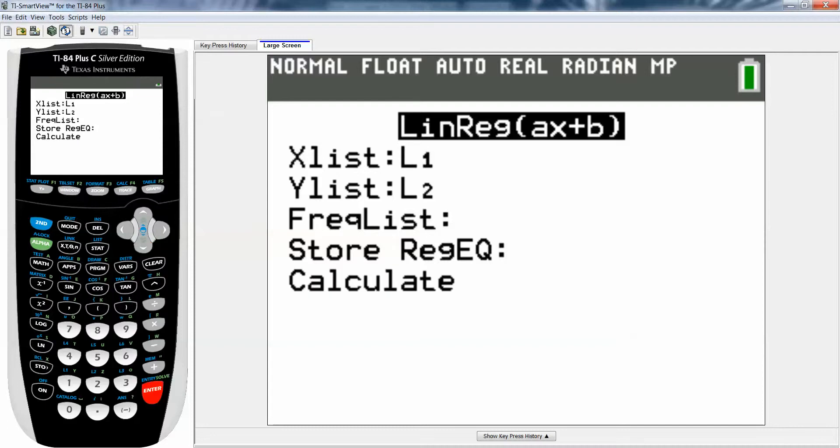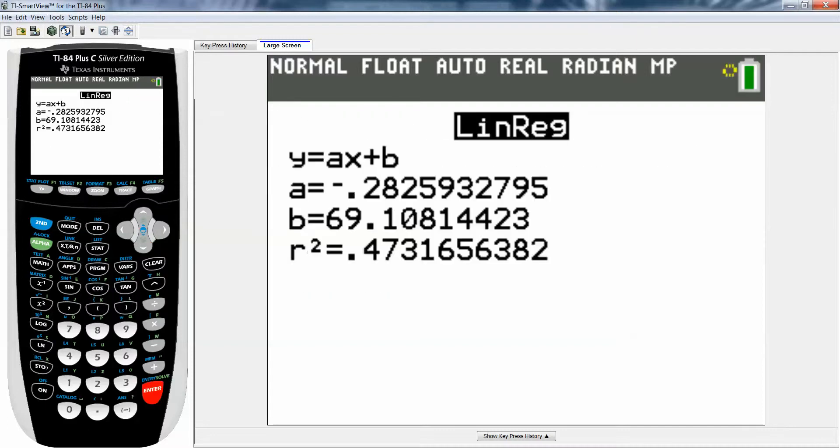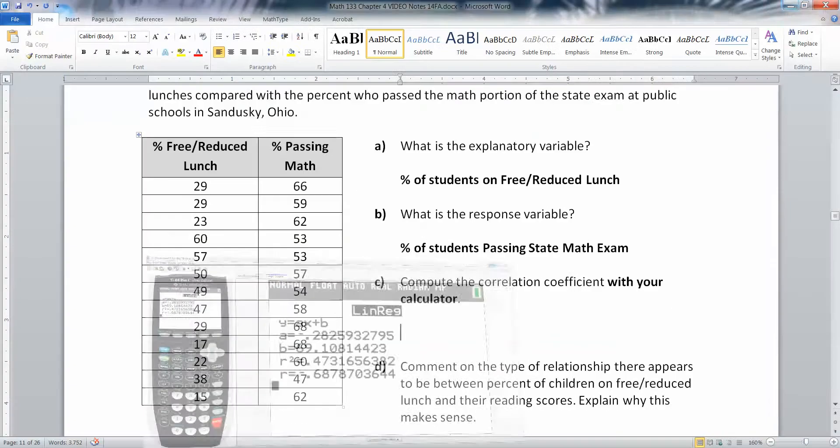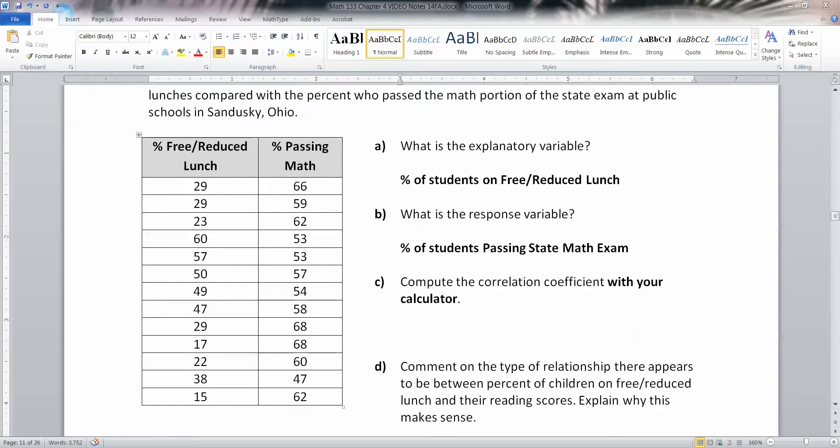Then it runs it. We'll worry about what the rest of all this is later, but for right now what we care about is R. R is negative 0.688 or so. R, remember, is your symbol for your correlation coefficient. So there is your correlation coefficient - it's negative 0.688.